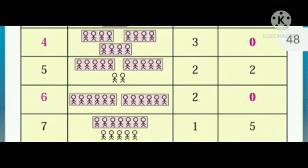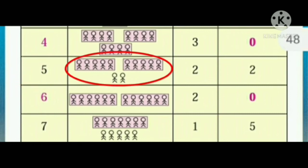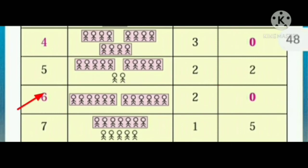The next number I am going to tell is 5. Now you have to make 2 groups of 5 members. So how many members are left now? 2 members are left. And the next number I have announced is 6. So you have to make 2 groups of 6 members. Now no one is left.